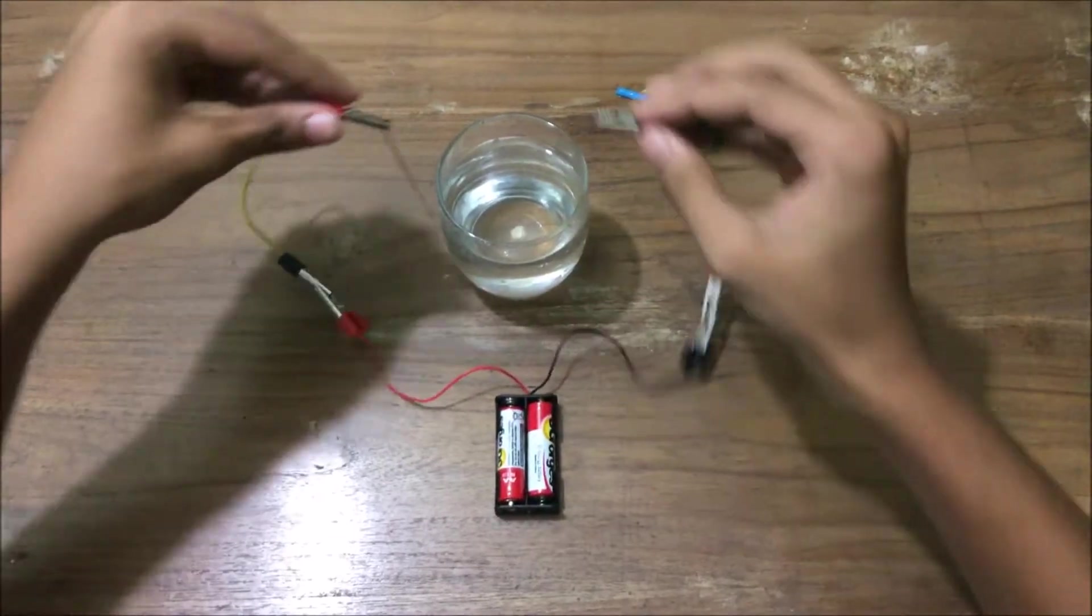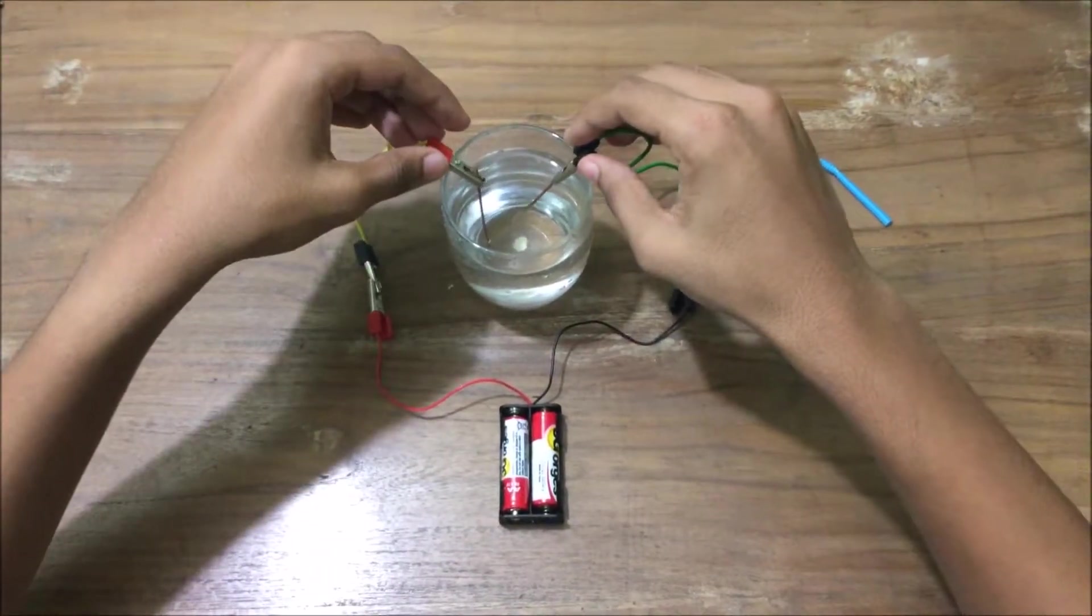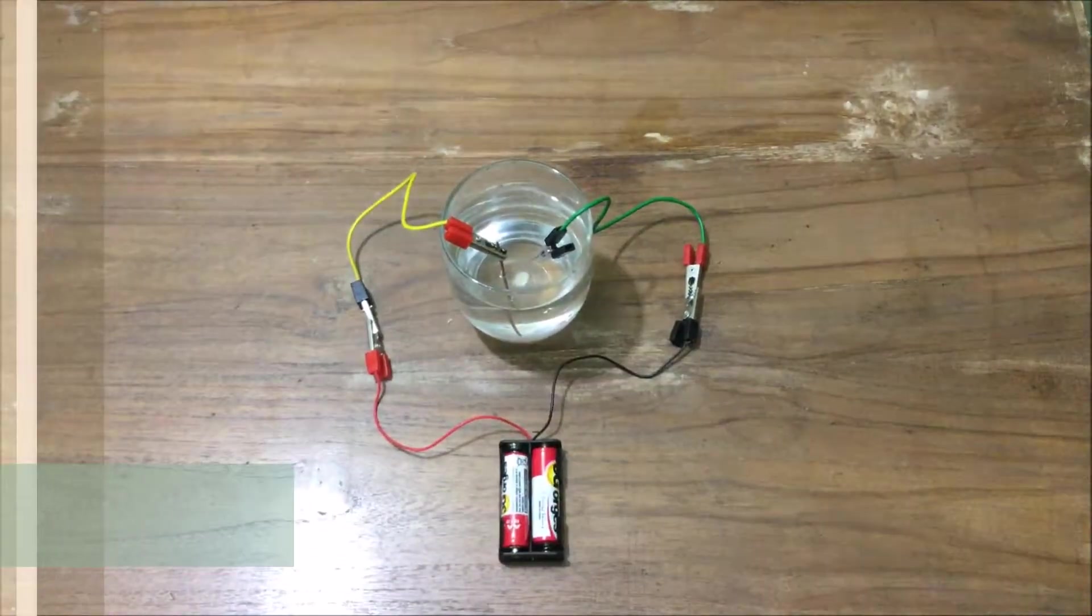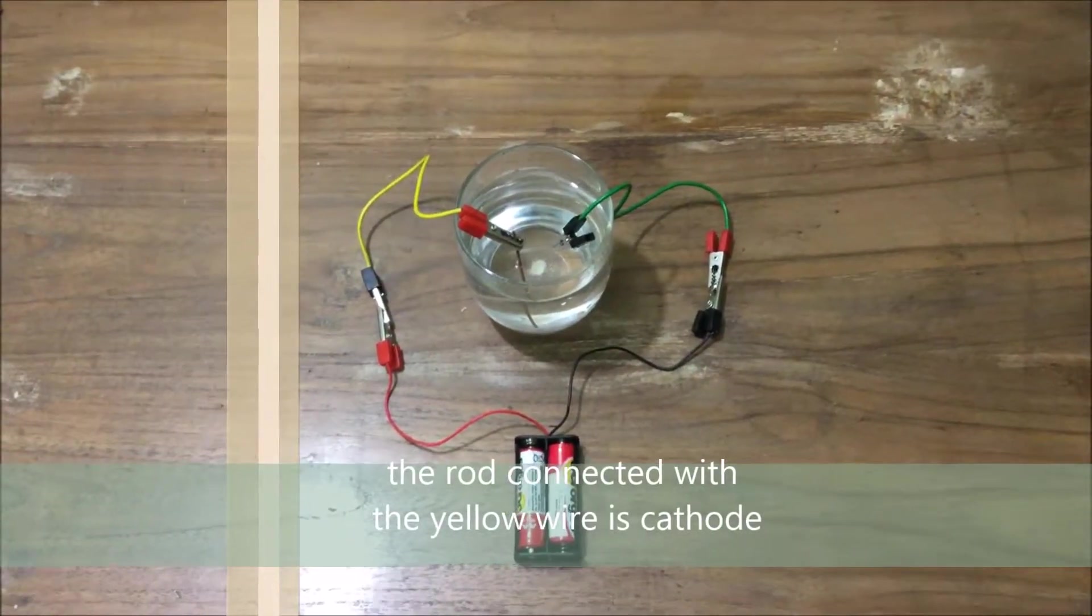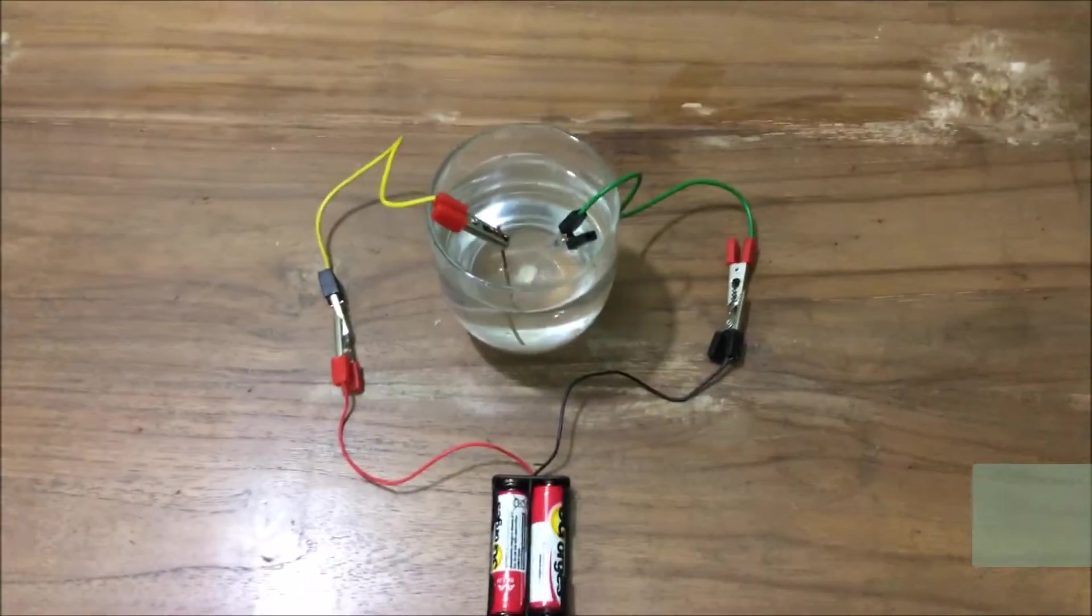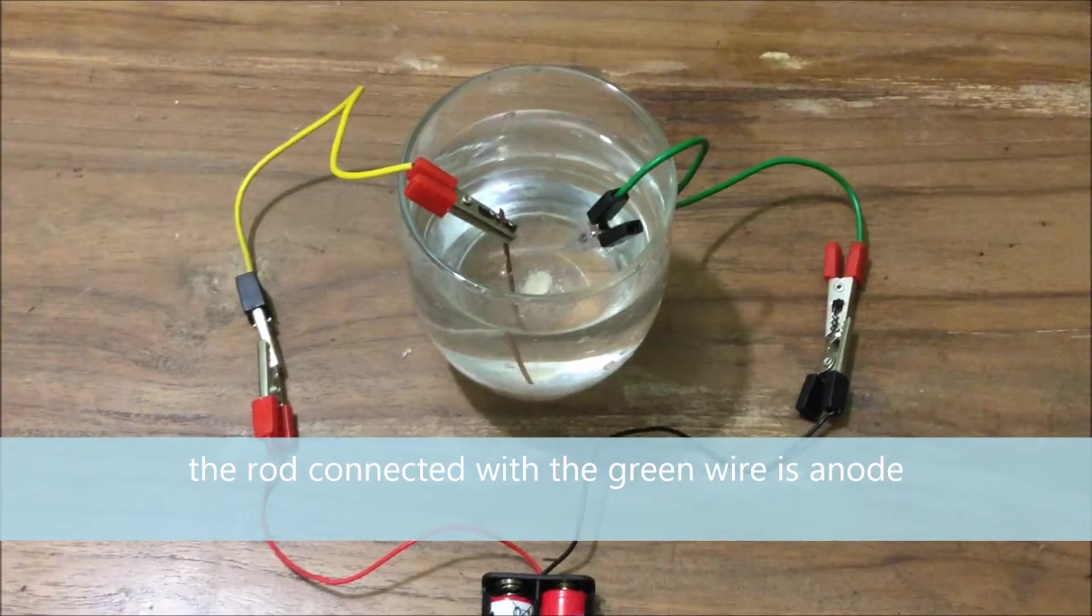Now put the battery attached to a casing and attach the rods with the battery. The rod connected to the positive end of the battery is called anode, and the rod connected to the negative end is called cathode.